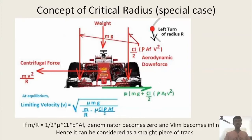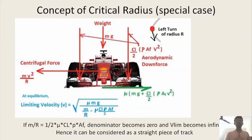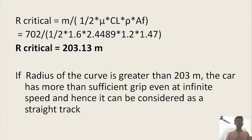In the expression for limiting velocity, the denominator contains m/r minus mu times C_L over 2 times rho times A_f. If m/r becomes equal to mu times C_L times rho times A_f, the denominator becomes zero and the limiting speed becomes infinite. This means the curve can be considered as a straight piece of track where the velocity limit is infinite and the car can go to any speed. In such a scenario we treat the curve as straight in nature. The critical radius formula gives r equal to m divided by half times mu times C_L times rho times A_f.